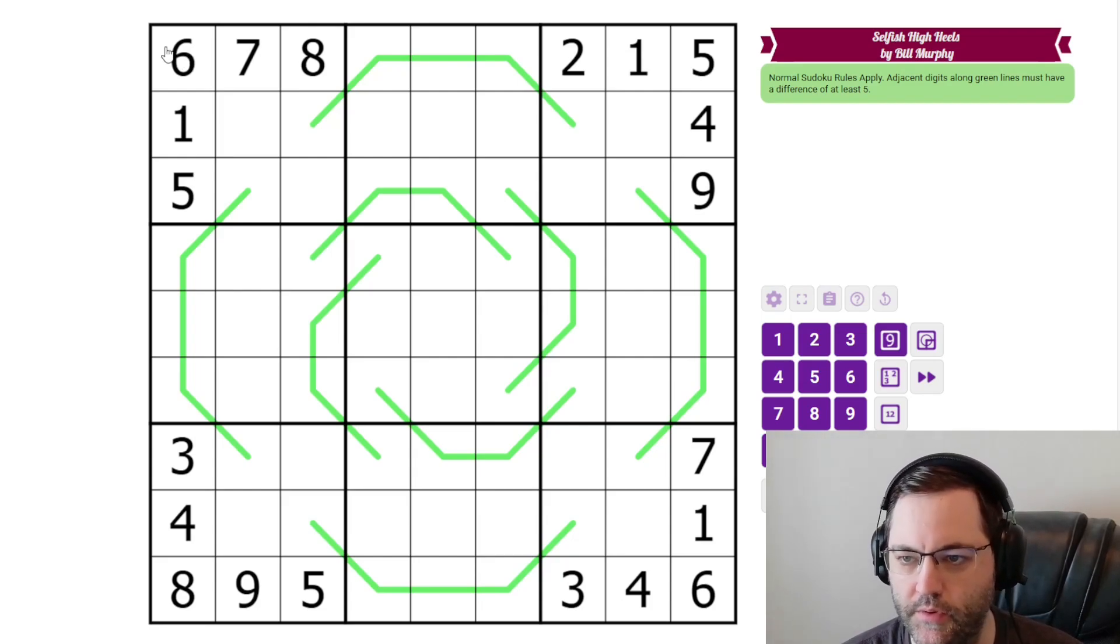But this is a German Whisper Sudoku. We have normal Sudoku rules, one to nine in each row, column, and three by three box. Additionally we have some lines in the grid, and digits that are adjacent along the lines must have a difference of at least five.